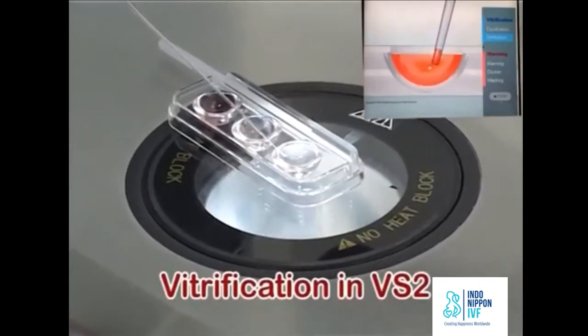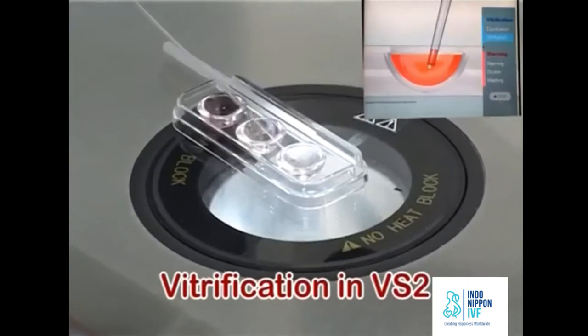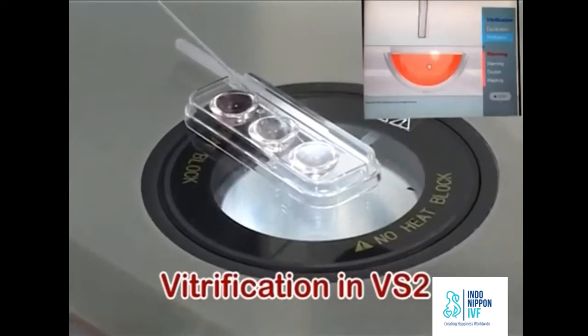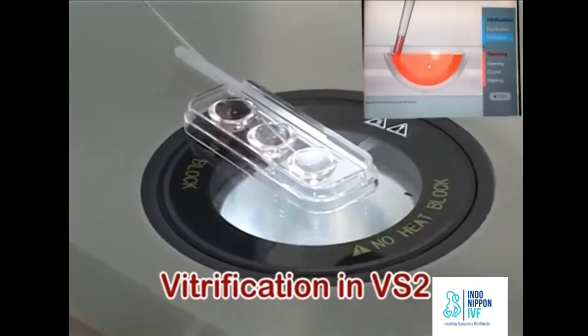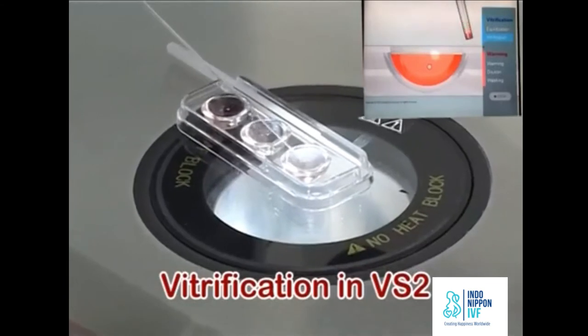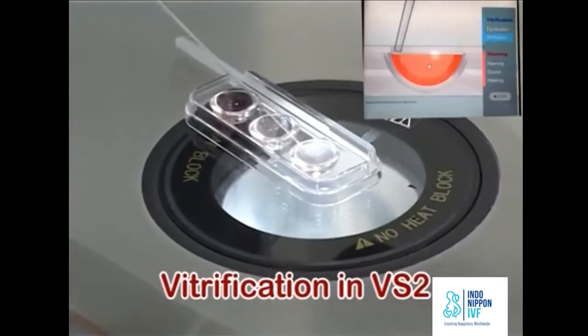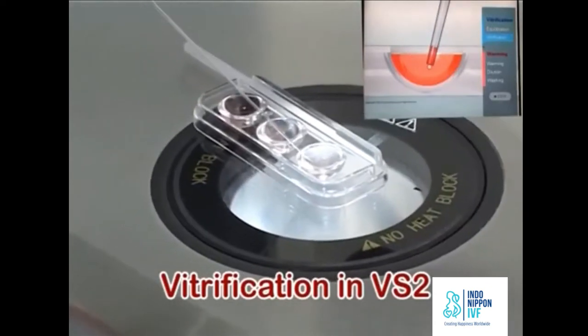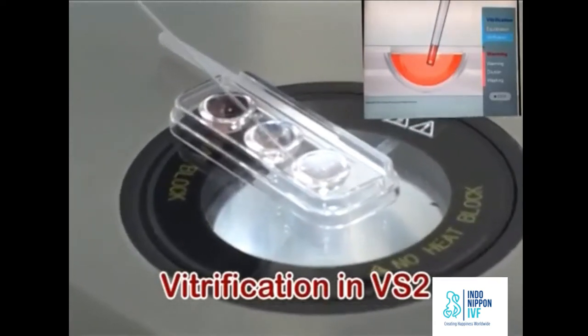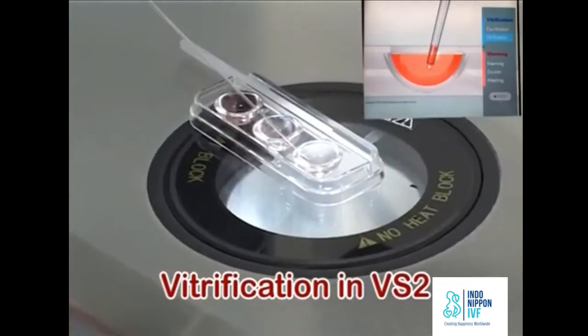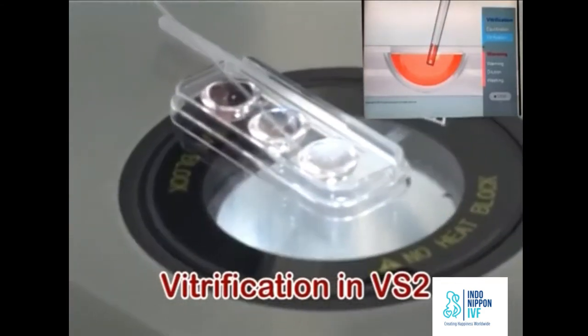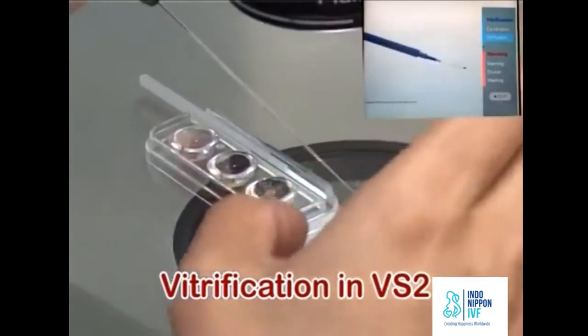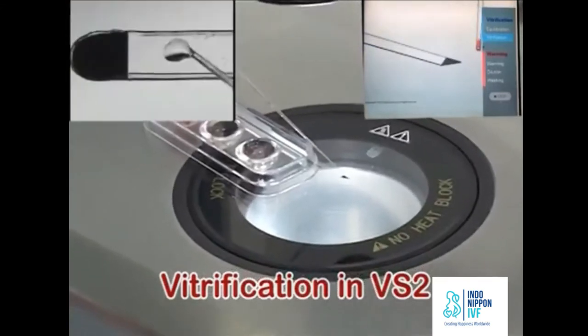Transfer the oocyte to the middle depth of VS-2 with minimal amount of VS-1. Discard the remaining VS and aspirate fresh VS-2. Expel VS-2 around the oocyte and mix the solution around the oocyte to exchange the remaining previous solution. This step is completed when the flat shrinking of the oocyte is absorbed. Aspirate the shrunk oocyte with minimal amount of VS-2 at the tip of the pipette. This entire step in VS-2 should be completed within 10 to 20 seconds.